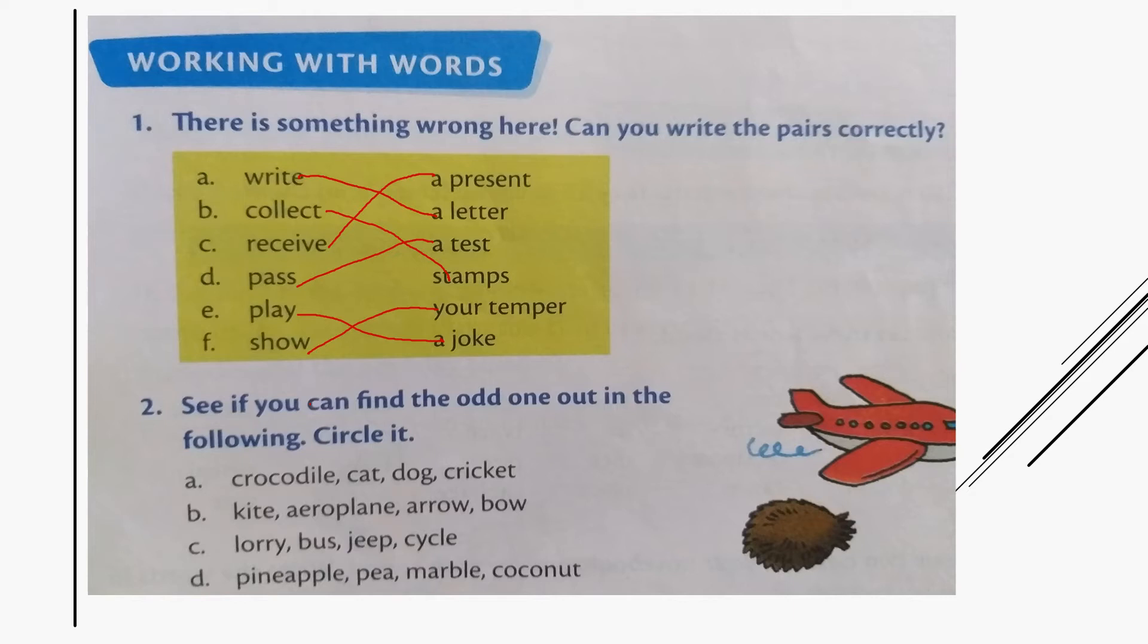See if you can find the odd one out in the following and circle it. You need to circle the odd one out. Here we have: crocodile, cat, dog, cricket. Which is the odd one here? Can you say which is the odd one? Crocodile, cat, dog, cricket. So here the word is cricket.